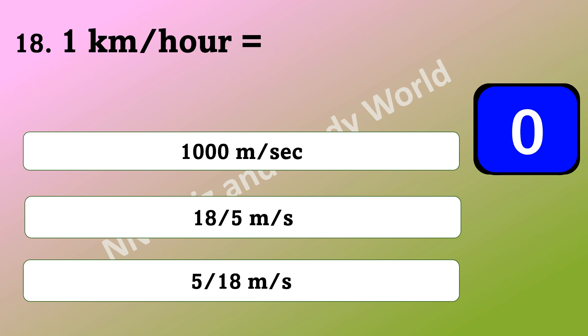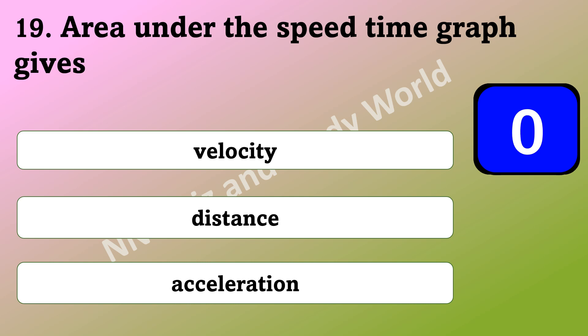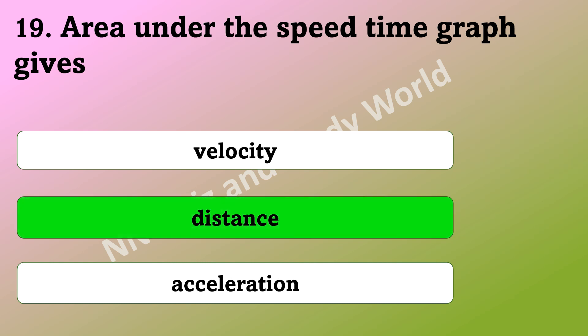What is 1 km per hour equal to? Is it 1000 m per second, 18 by 5 m per second, or 5 by 18 m per second? The answer is 5 by 18 m per second. What is the area under the speed time graph? Is it velocity, distance, or acceleration? The answer is distance.